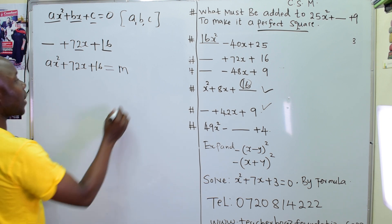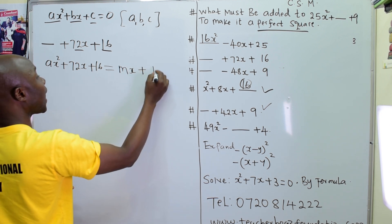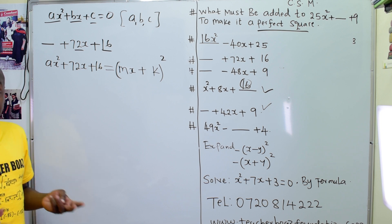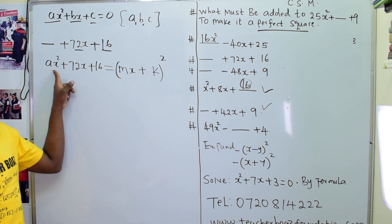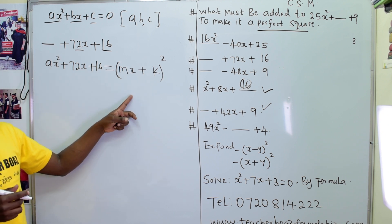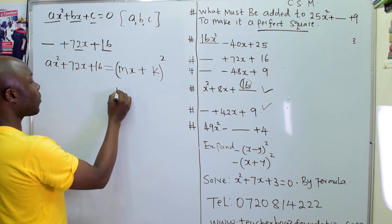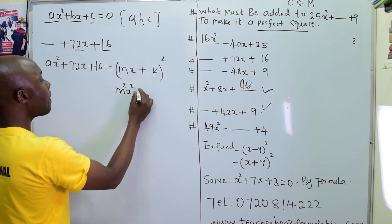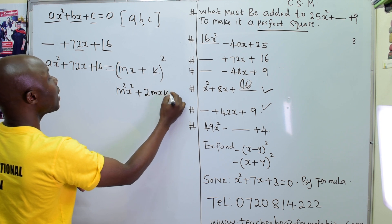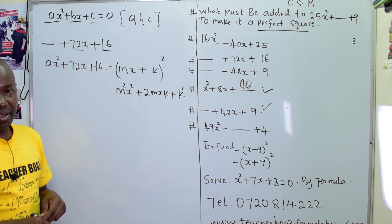Add another constant we don't know, call it k, then close the bracket and square. Expanding: m squared x squared, plus mx times k times 2, which is 2mxk, plus k squared. The method is always to expand, then compare coefficients.